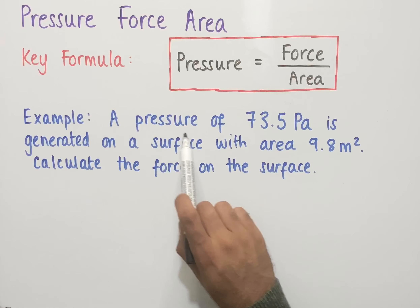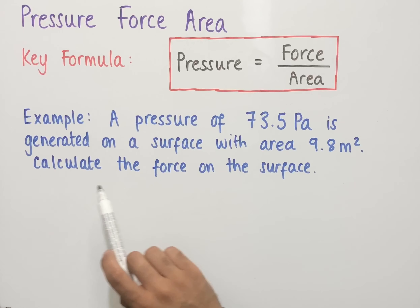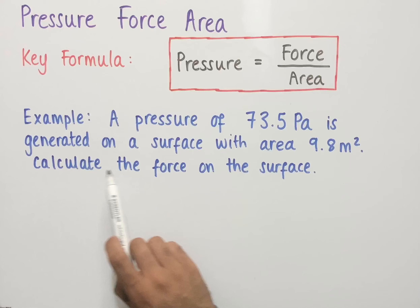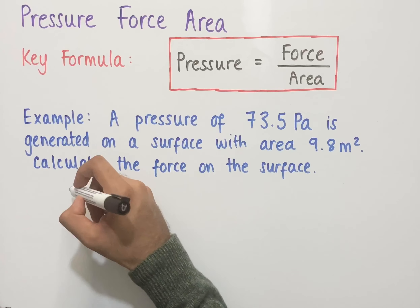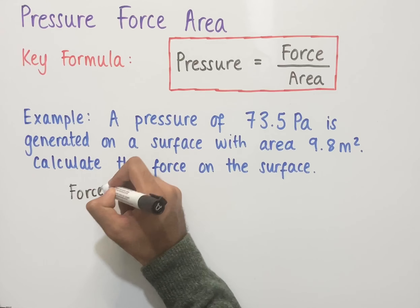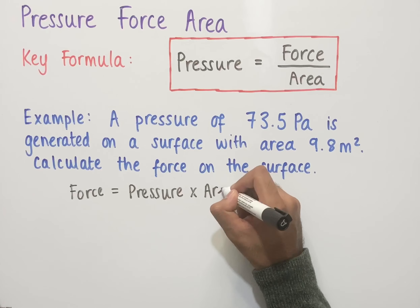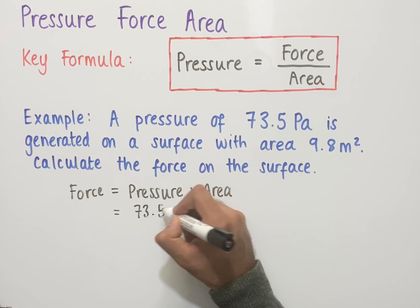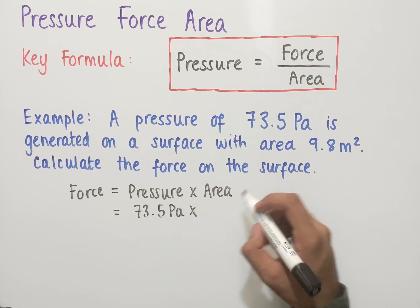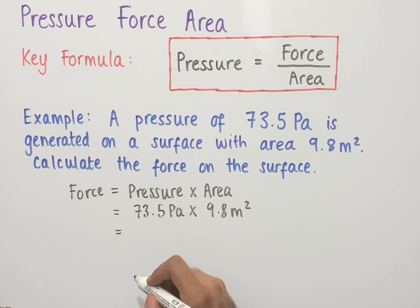The final example says: a pressure of 73.5 pascals is generated on a surface with area 9.8 meters squared. Calculate the force on the surface. Since we're calculating force, we rearrange the formula: force equals pressure multiplied by area. The pressure is 73.5 pascals and the area is 9.8 meters squared. Calculating this: 73.5 multiplied by 9.8 gives us 720.3.